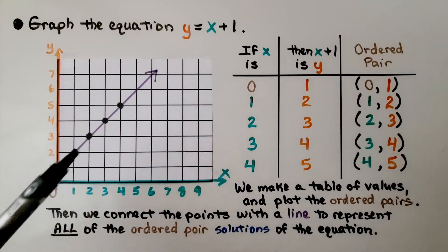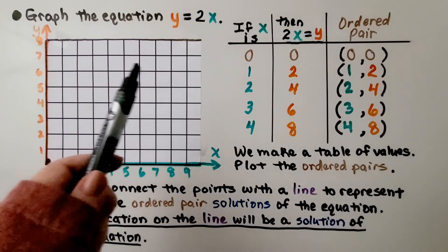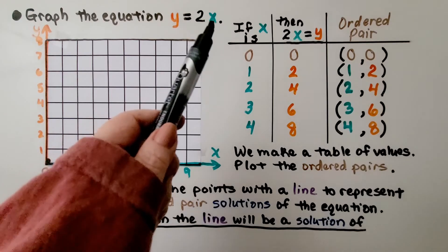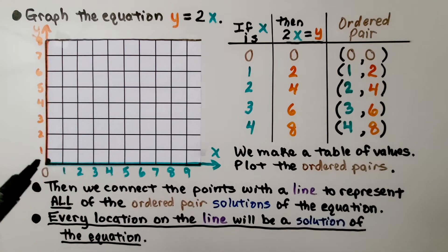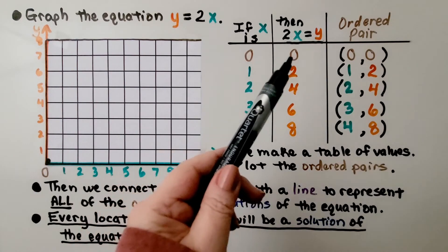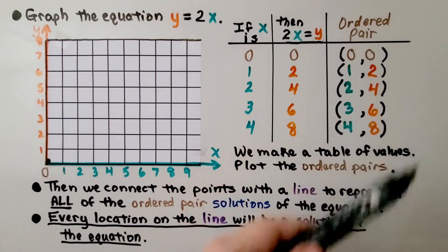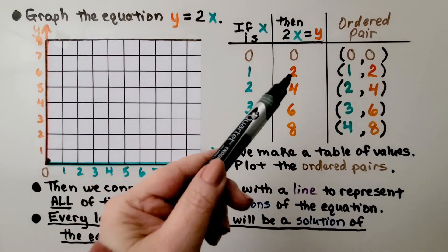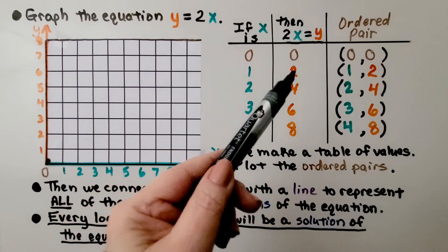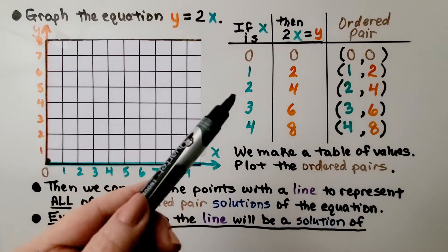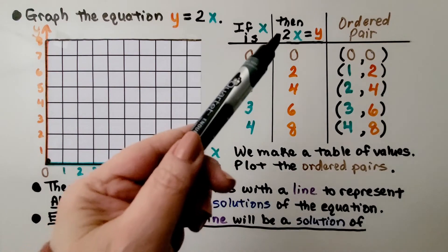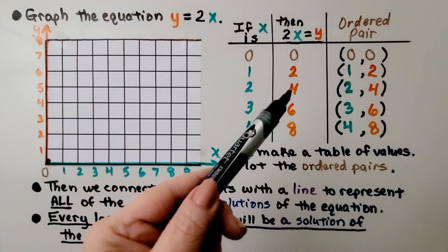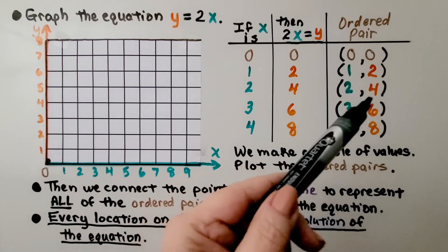Every point on this line is considered a solution of the equation. Now we're going to graph y equals 2x — that's 2 times whatever x is. If x is 0, 2 times 0 is 0, so our y is 0 and our ordered pair is (0, 0). If x is 1, 2 times 1 is 2, so our y is 2 and our ordered pair is (1, 2). If x is 2, 2 times 2 is 4, so our y value is 4 and our ordered pair is (2, 4).